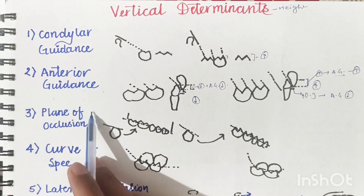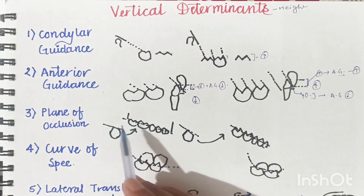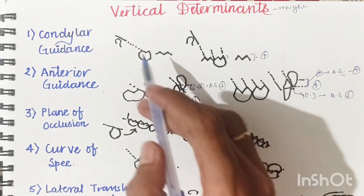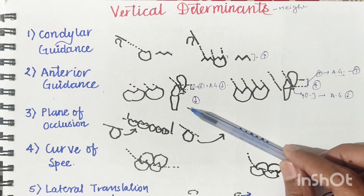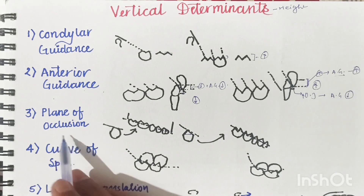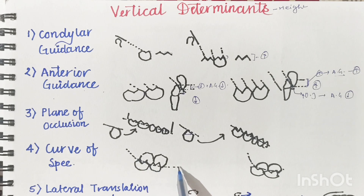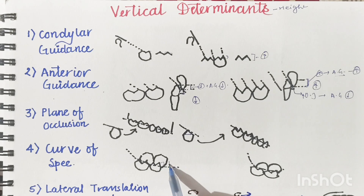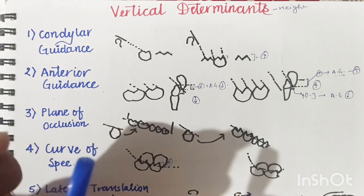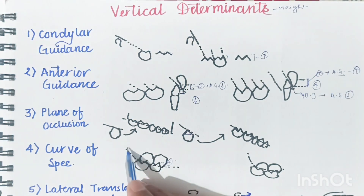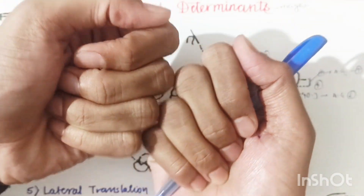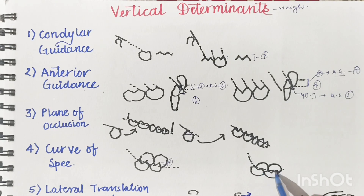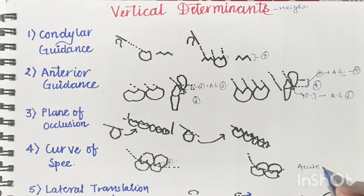The third vertical determinant is the plane of occlusion. If the plane of occlusion is parallel to condylar guidance, cusp height will be shallower. If it is not parallel — if it has some cant or angulation — the cusp will be sharper. The fourth is the curve of Spee: if the curve of Spee is smooth and not very acute, we can afford to give sharper, taller cusps because they can still slide with each other.